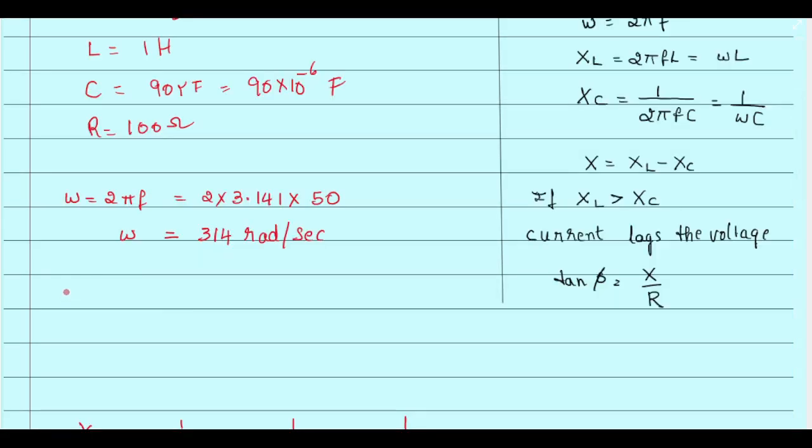Let us calculate the inductive reactance XL that is 2 pi FL. We can write this as omega into L, omega is 314 into inductive value is 1, so we get it as 314 ohms. So inductive reactance XL equal to 314 ohms.